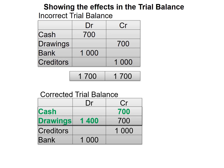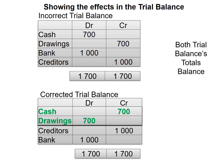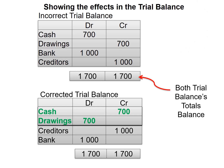We will debit our drawings with 1,400, which will leave us with a debit balance of 700. After we have corrected the error, our trial balance balances. You can see our incorrect trial balance balances before the error was corrected, and after the error was corrected, the trial balance still balances. This is what you need to pay attention to when dealing with errors that do not affect the trial balance.